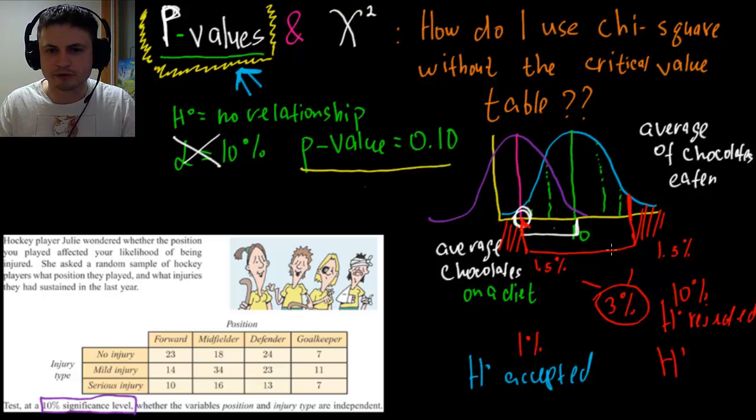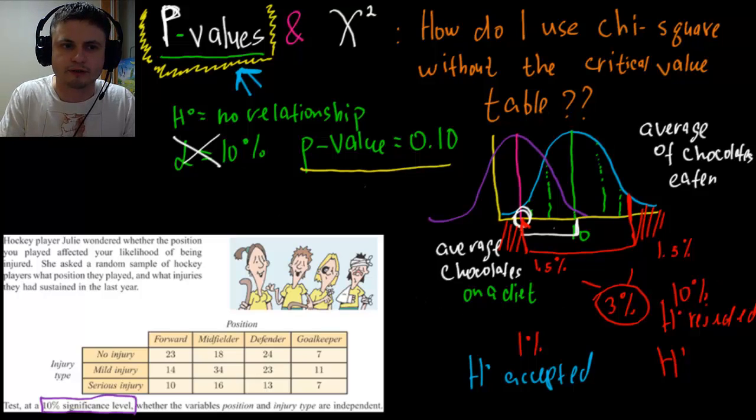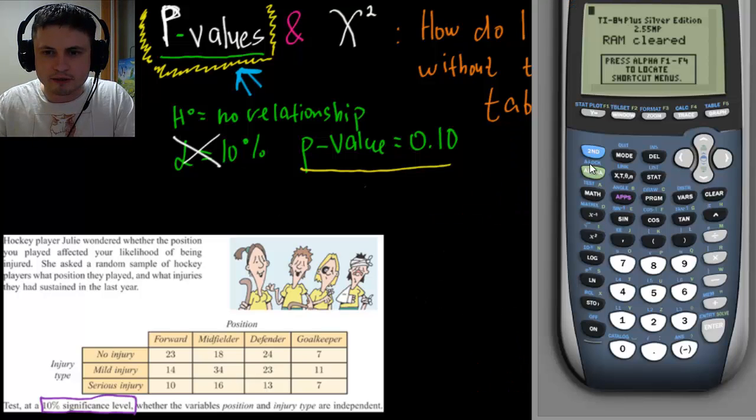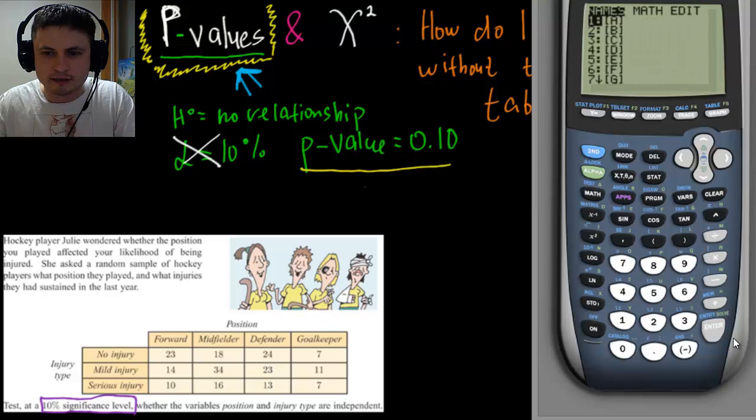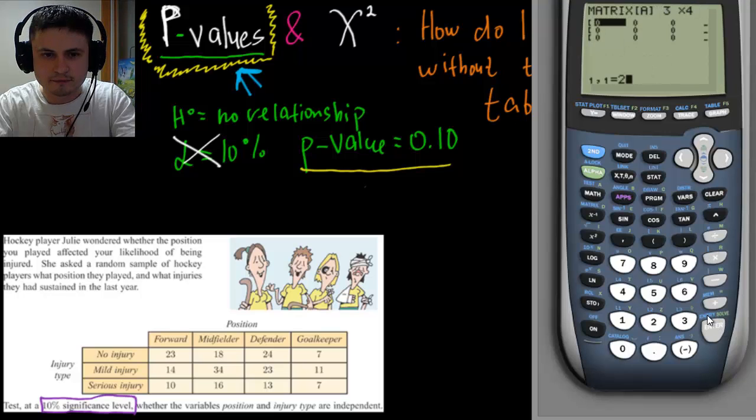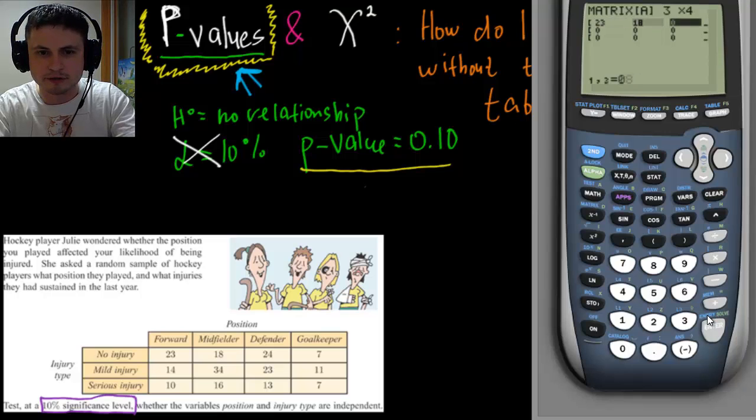So this was kind of a visual representation. But now let's try to do this problem on a calculator and see what p-value we get for it. And step number one is we're going to go into the matrix and enter all of these values. And this is a matrix that is, oops I clicked on the wrong button, edit. And this will be a three by four matrix. And enter each value into each of the boxes.